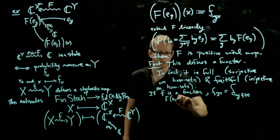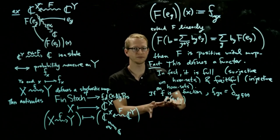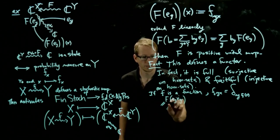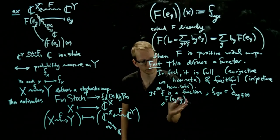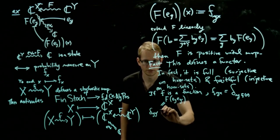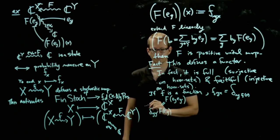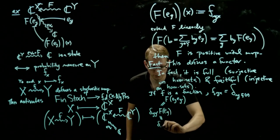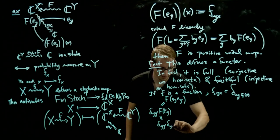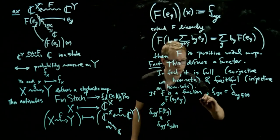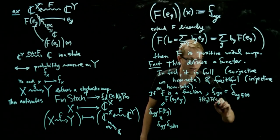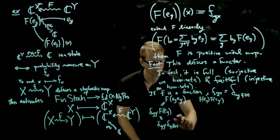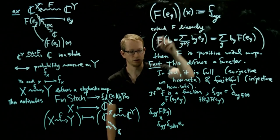So let's look at F(E_y · E_{y'}). We know this equals delta_{y,y'} · E_y, and we can pull that delta out: delta_{y,y'} · F(E_y). That just follows from the product of these two specific functions. By the definition of F(E_y), this equals delta_{y,y'} times delta_{y, f(x)} times E_x, summed over all x. On the other hand, we also have F(E_y) · F(E_{y'}) — using the definition of F, we'll have two of these expressions, summed over all x and x'.